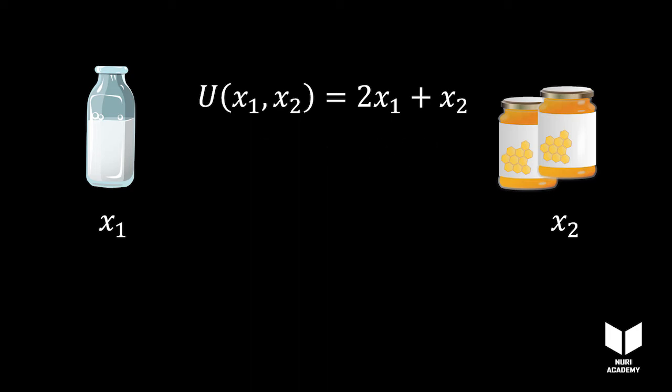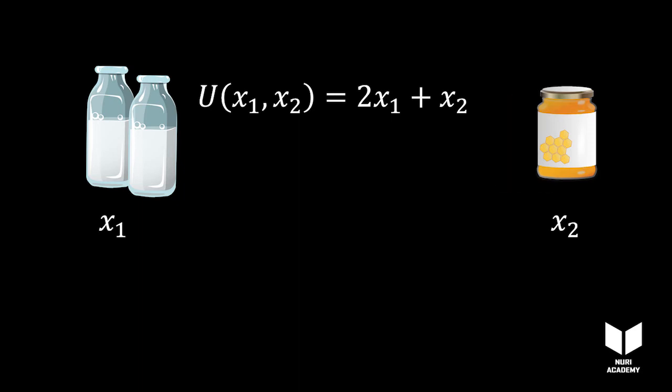If, by contrast, she needed two ounces of milk to lower her honey consumption by one, her utility function would be X1 plus 2X2.